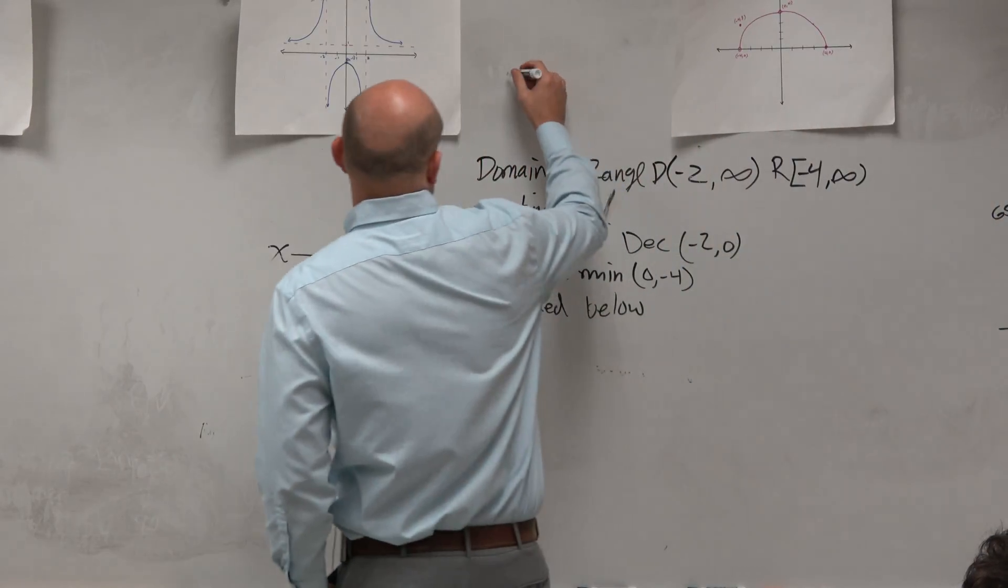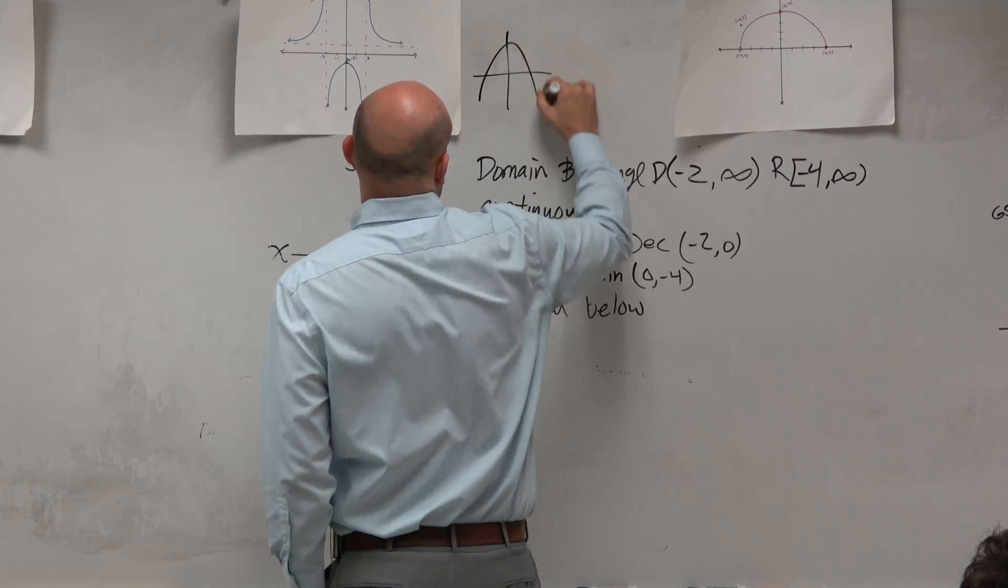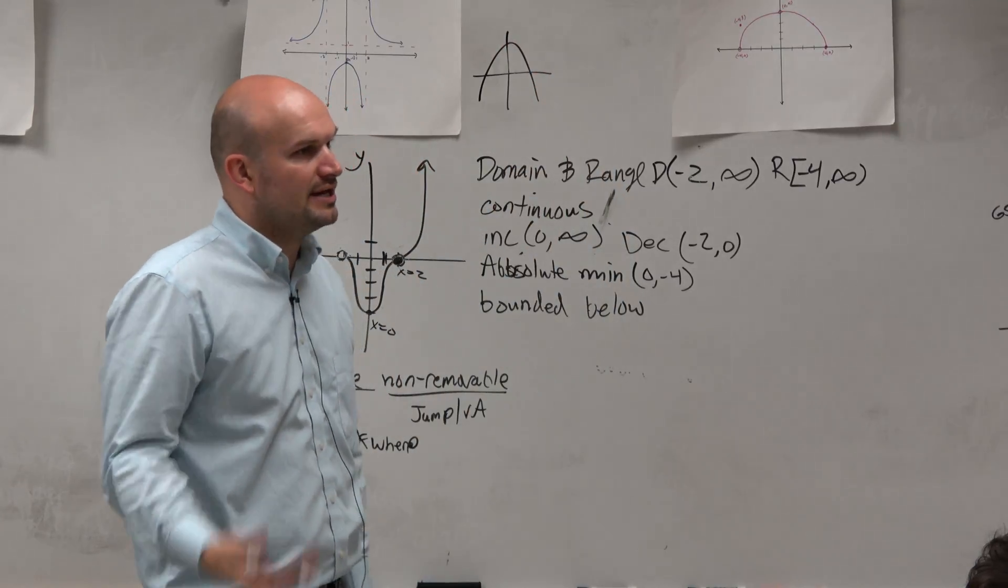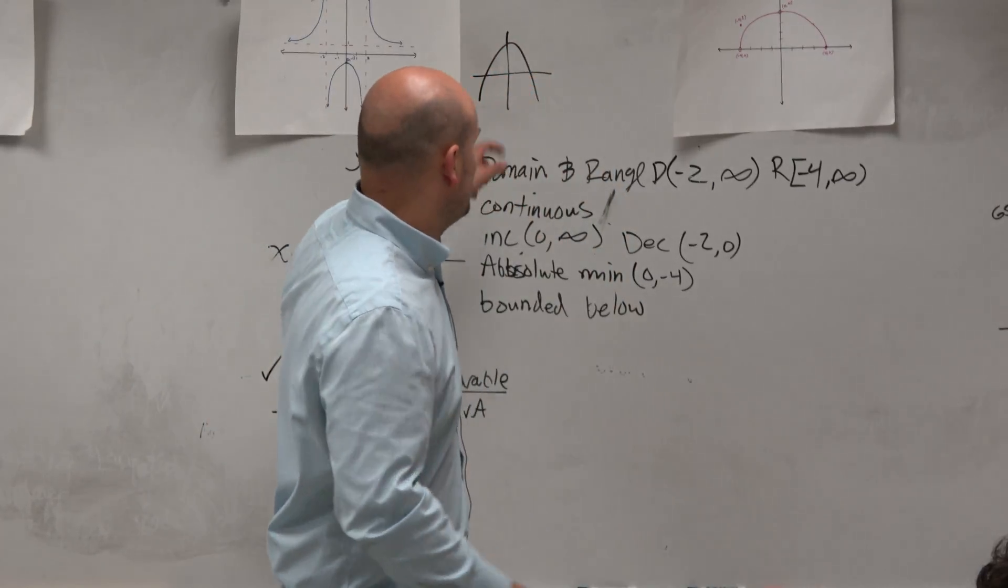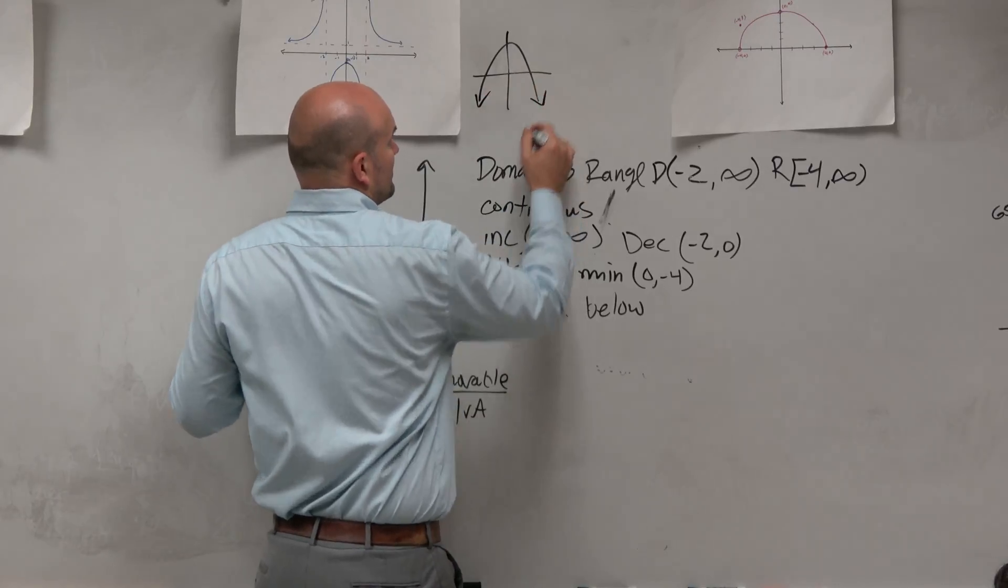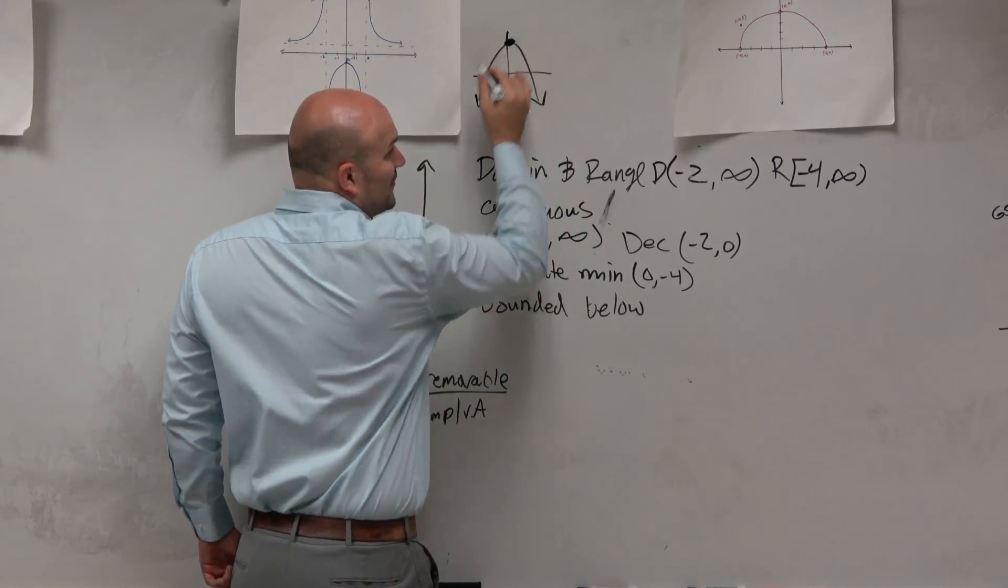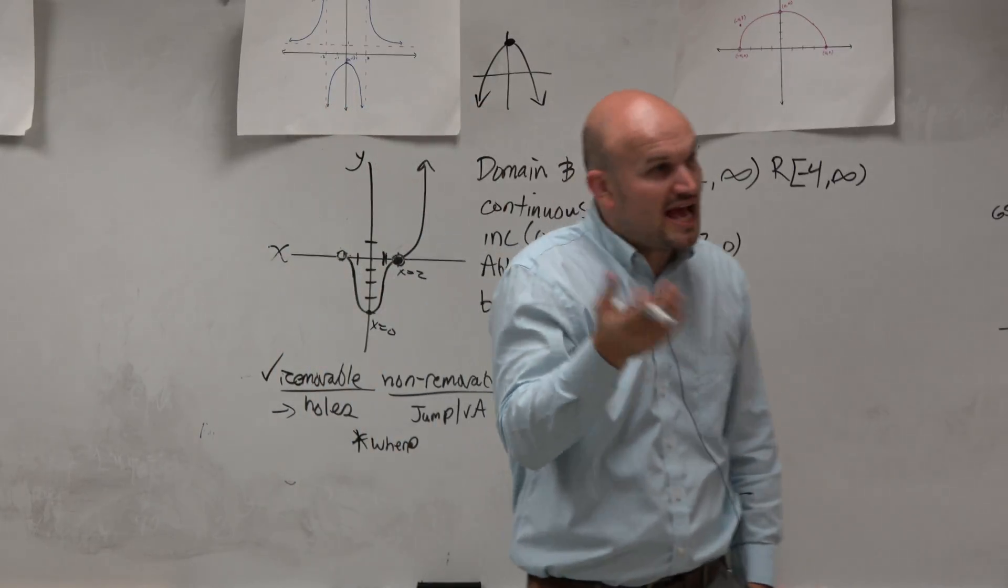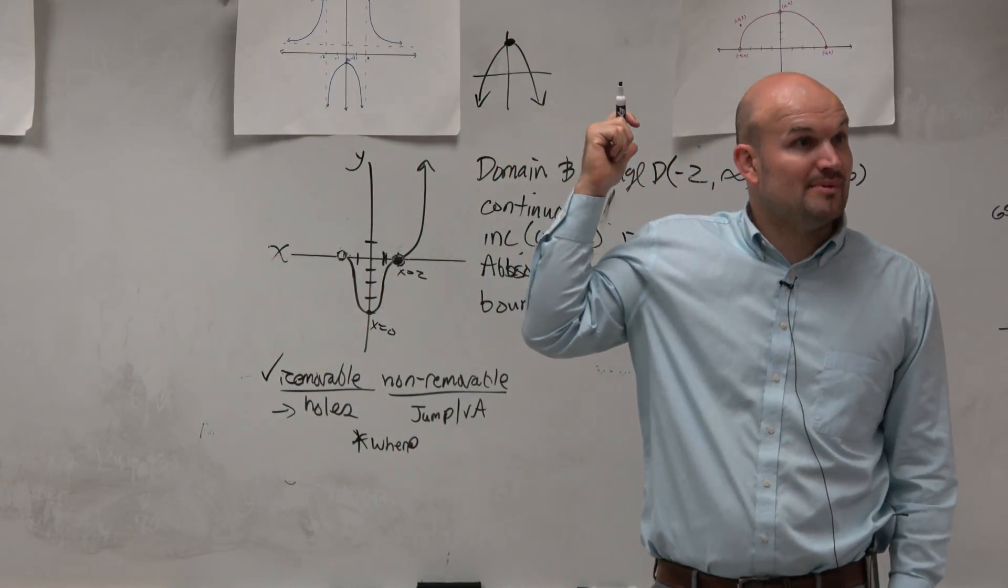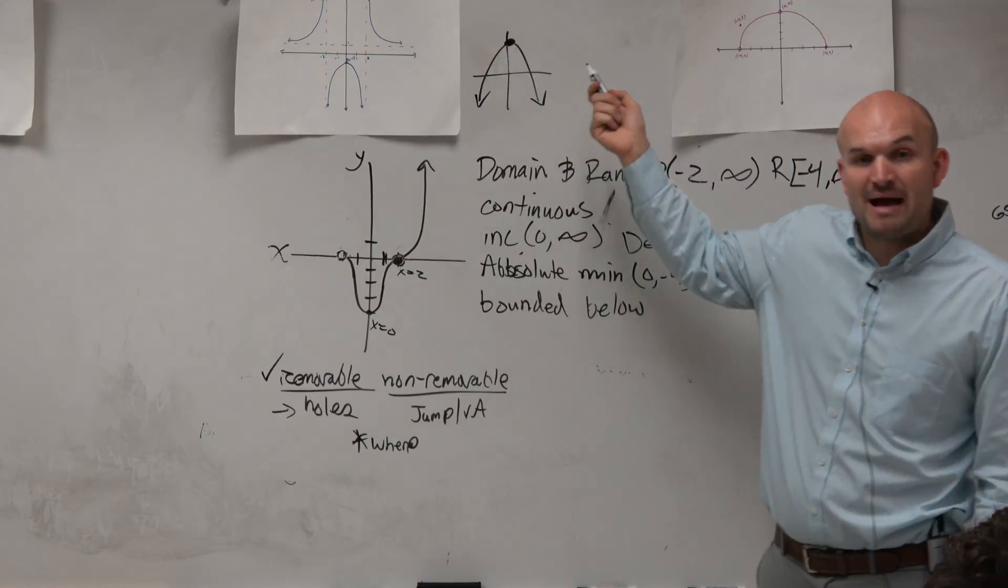If you guys want to look at something that's bounded above, look no farther than a quadratic, like opening down. That is bounded above because it only goes so high. It only goes as high as the vertex, which is actually, in this case, also an extrema. It's also an absolute maximum.